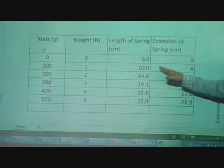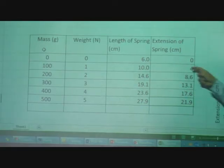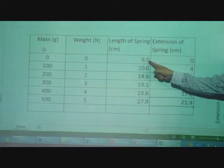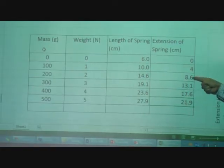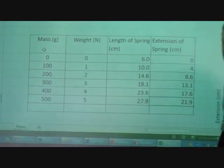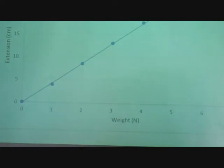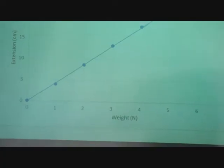From that, we've effectively gone 10 minus 6 gives us an extension of 4. 14.6 minus 6 gives us an extension of 8.6, etc. Then we've put that on a graph, and we end up with a graph of extension against weight.